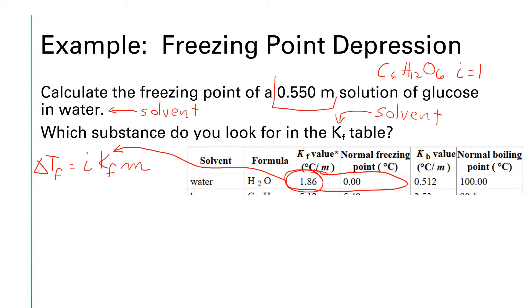So we're ready to plug numbers in. i is one, k sub f is 1.86 degrees C per molal and our molality was 0.550 molal. So molality cancels with molality.